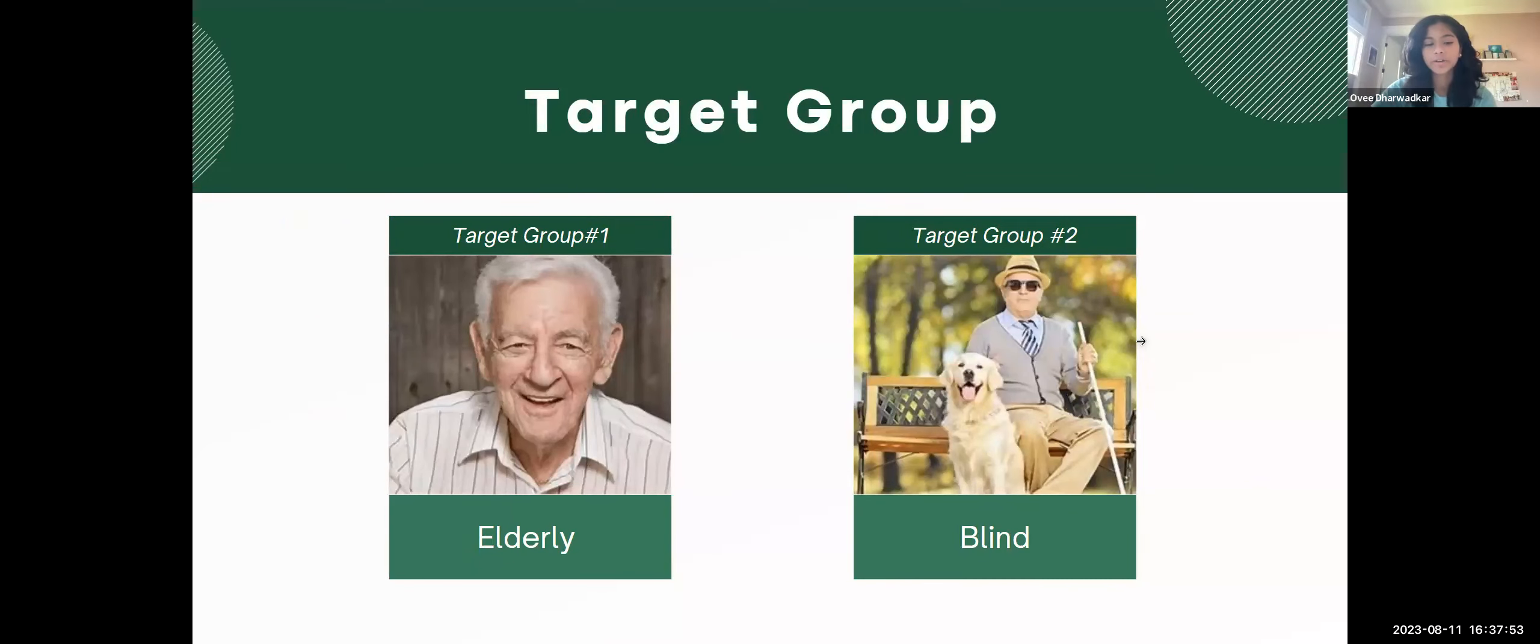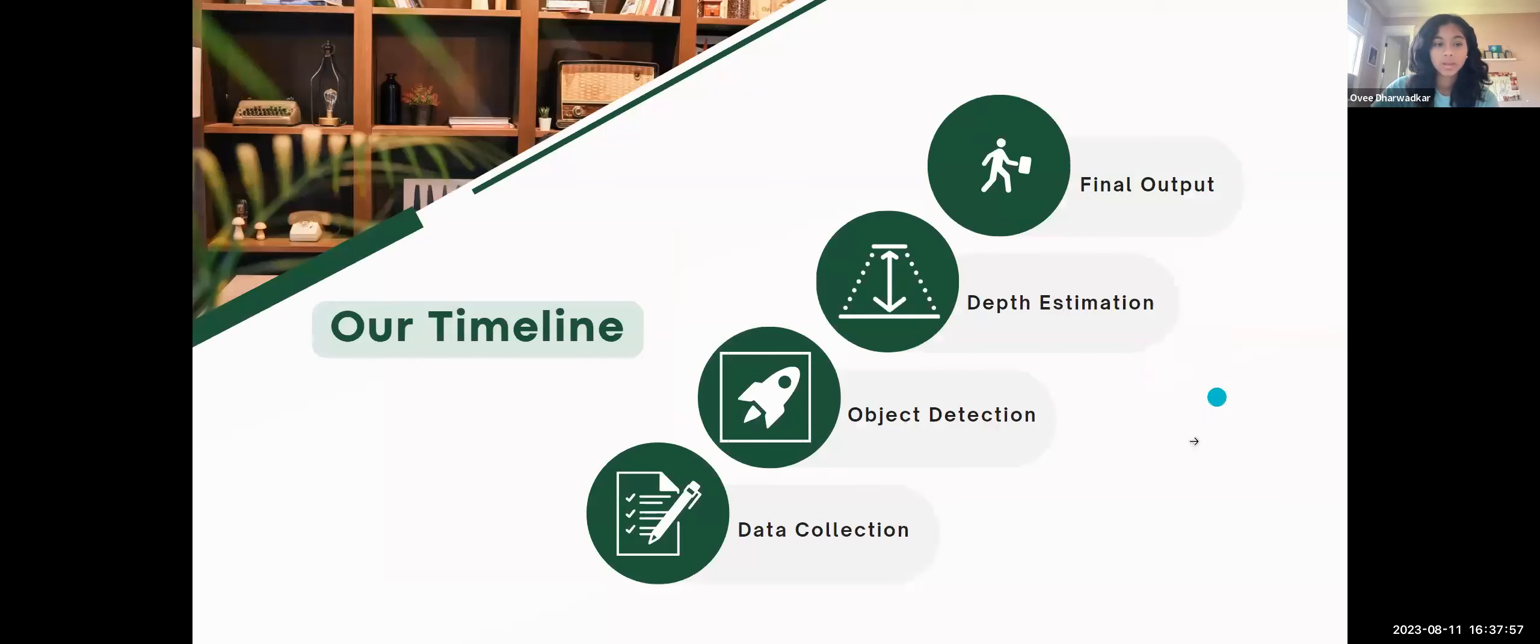Our two biggest target groups are the elderly and the blind. This is a brief timeline of our project and how we actually went about doing it. First, we collected all of our data from Google, then we inputted them both into the object detection and the depth estimation models. From there, we combined them both onto our Gradio application for our final output.